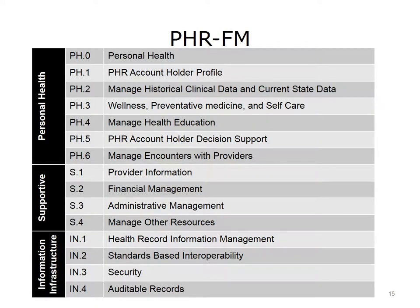The PHR-FM overview includes primary sections for personal health with subsections: personal health details, PHR account holder profile, manage historical clinical data and current state data, wellness, preventative medicine and self-care, PHR account holder decision support, and management of encounters with providers. The supportive section includes provider information, financial management, administrative management, and other resource management. The information infrastructure includes health record information management, standards-based interoperability, security, and auditable records.